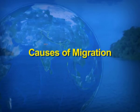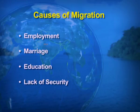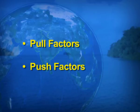Now we'll be taking up what are the causes of migration. There are various causes that people migrate from one place to another. The causes can be: number one, employment; number two, marriage; number three, education; and number four, if people feel a lack of security at a certain place, they would like to migrate to a safer place. These factors responsible for migration are divided into two parts: pull factors and push factors.